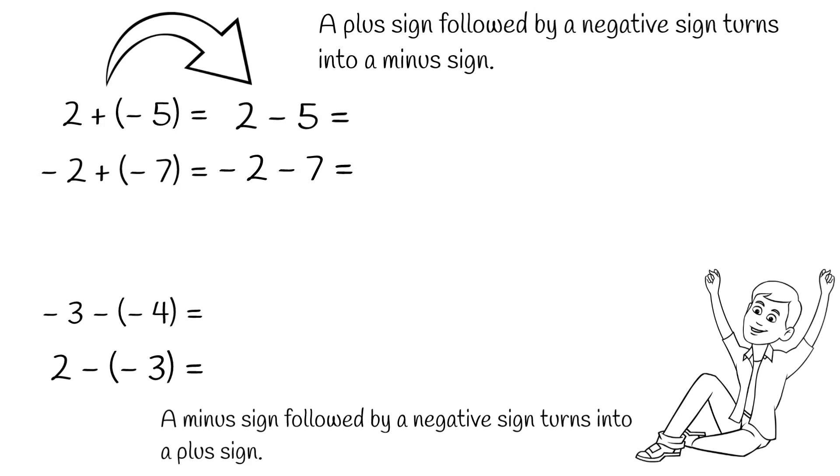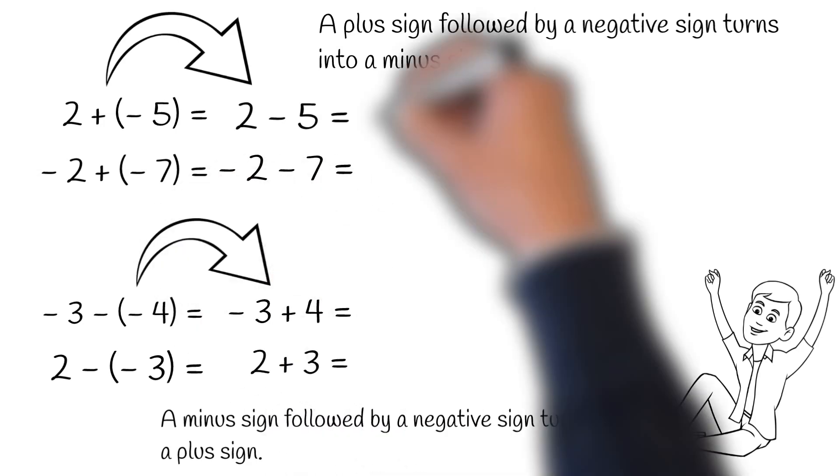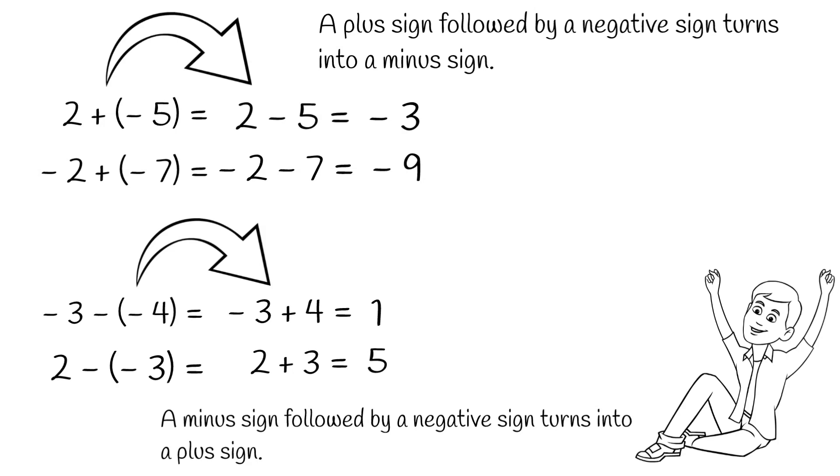When subtracting a negative integer, a minus sign followed by a negative sign turns into a plus sign. Then follow the rules we already learned from adding and subtracting a positive integer.